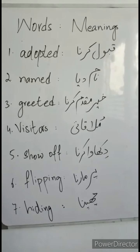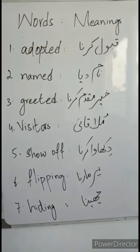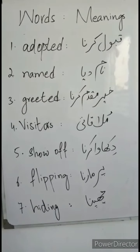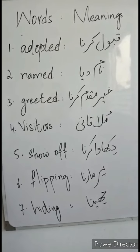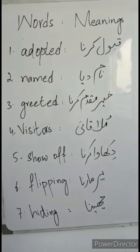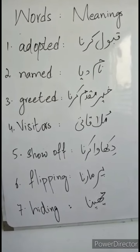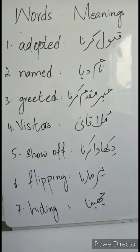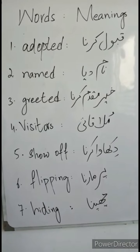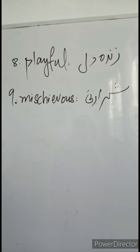Now words meaning of paragraph two: Adopted — qubool kiya. Named — naam diya. Greeted — khair maqdam karna. Visitors — mulaqati, ajnabi log jo kisi jagah par pehli baar jaate hain. Show off — dikhawa karna. Flipping — par maarna; the dolphin has two small wings called flippers on its front side. Hiding — paani mein chupna. Playful — zindadil, khush dil. Mischievous — naughty, sharaarati.